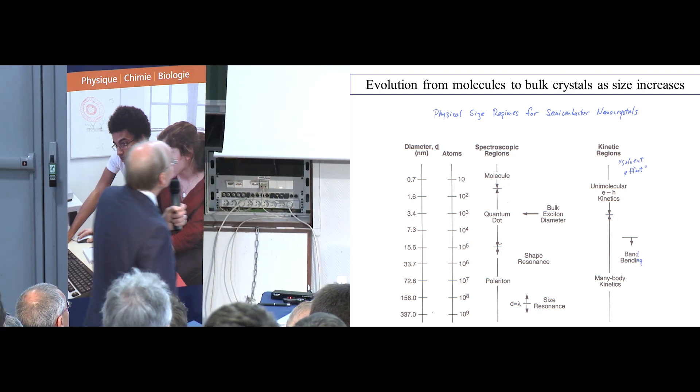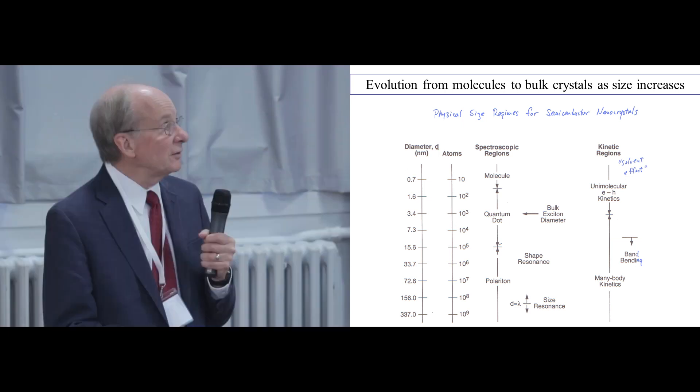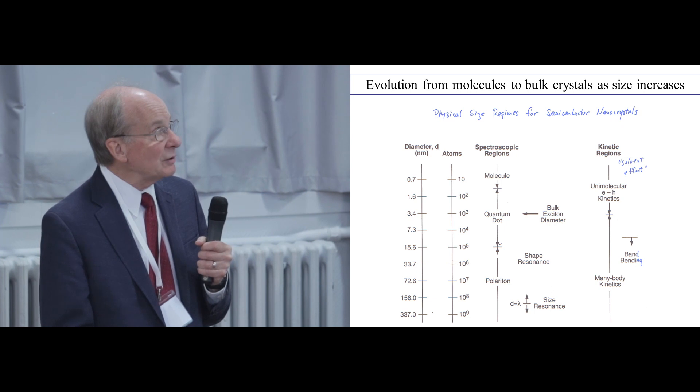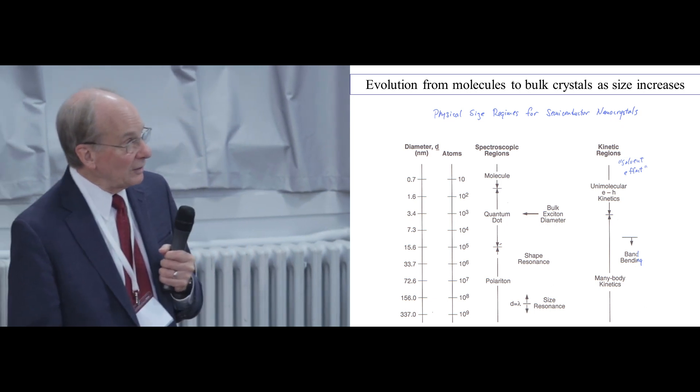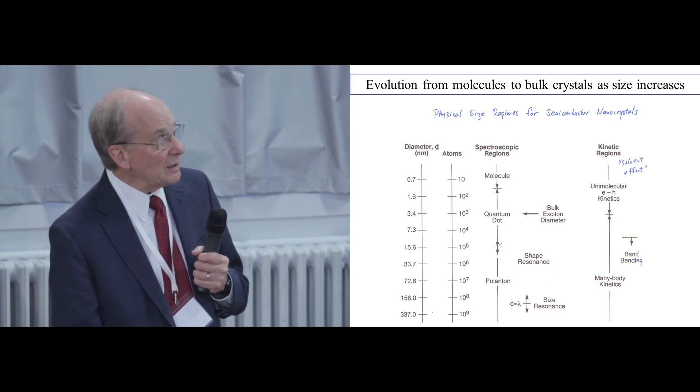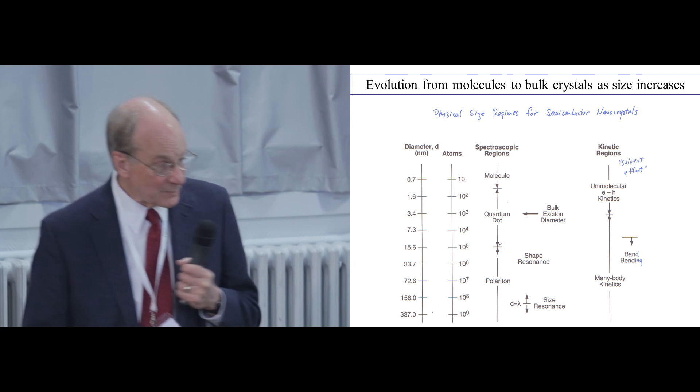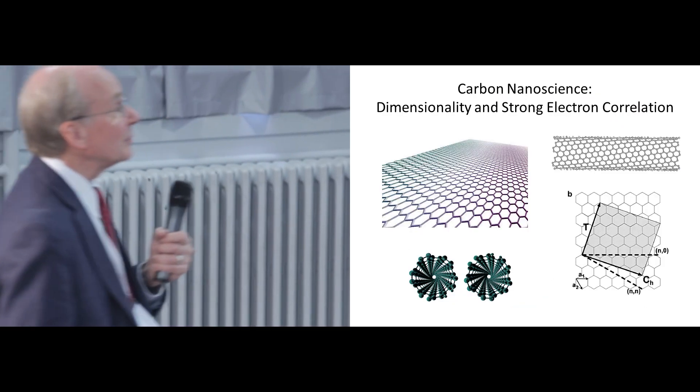I also tried to work out the size regimes, thinking through this kind of physical diagram as a function of diameter. The molecular regime, quantum dot regime, and the actual size resonance in Maxwell's equations, polariton regime. There's also kinetic regimes in kinetics, for single electron hole pairs, and then for multiple electron hole pairs interacting with each other. All of that, some time ago.